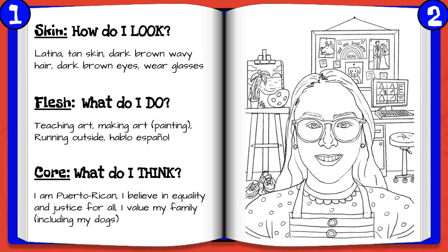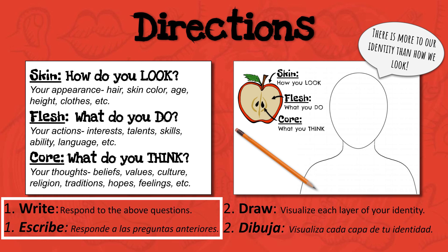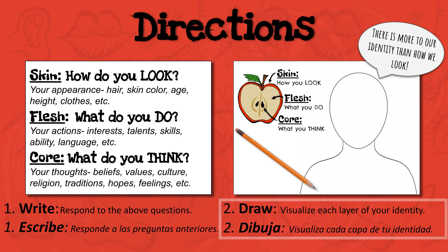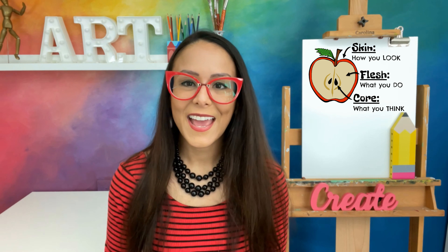You can see how I represented my outermost layer, mi piel, by drawing what I really look like. For my second layer, mi pulpa, I wrote about how I love teaching art, so I included my virtual Zoom art class on the computer and drew an easel by my desk and added a painting smock. I also enjoy running, so I included my favorite sneakers. The hardest layer to visualize is your core or tu centro. I'm Puerto Rican, so I included an image of la playa on my canvas. I also believe in equality and justice for all, so I made a poster that says todos son bienvenidos aquí. Familia is also muy importante, so I made sure to include pictures of them hanging on my wall.